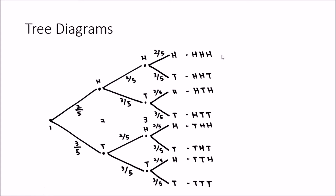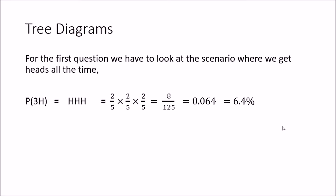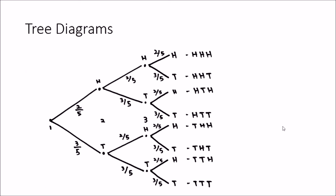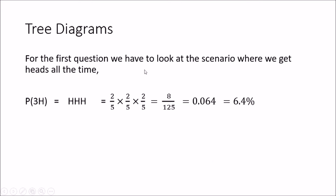For question one — getting heads all the time — we look at the topmost branch where we get three heads. The probability is 2/5 × 2/5 × 2/5, which equals 8 over 125, or 0.064. So there is a 6.4% probability of getting three heads when tossing this biased coin three times.